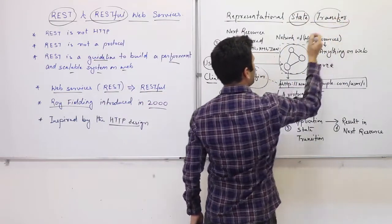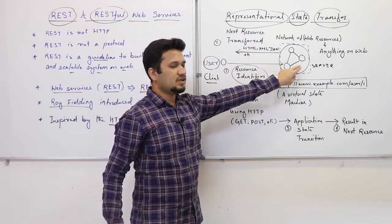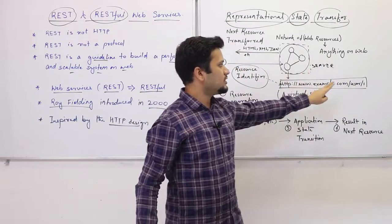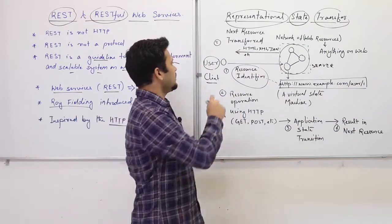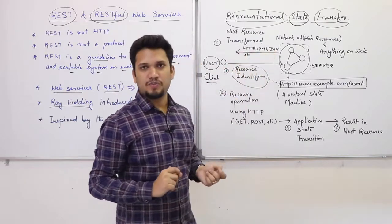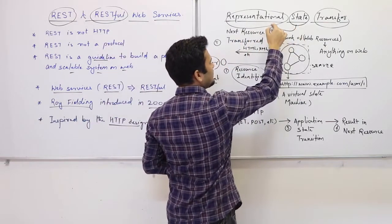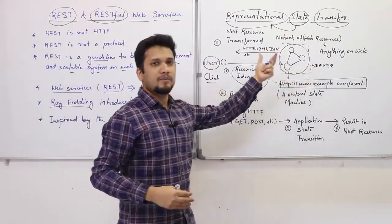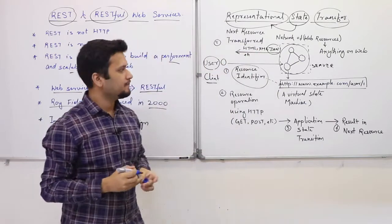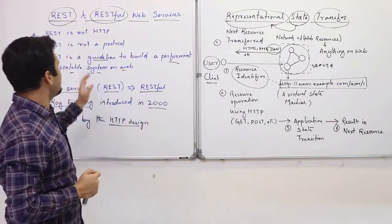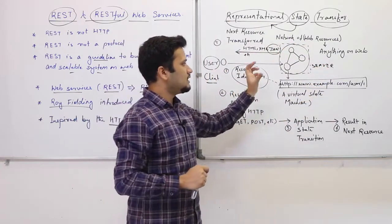Now you can understand what 'representational' means. The server stores the user in a database — for example MongoDB — in a particular way. What the client receives is a JSON response of the user information. The client is getting the state, but not in the actual way the server stores it — rather, a representation of that state in some other format. That is what is meant by 'representation'.